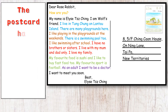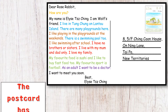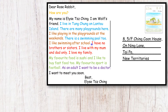The postcard has writing about the family of Elise Tzijun. We can see what Elise says about her family: 'I have no brothers or sisters. I live with my mum and dad only. I love my family.' In an introduction, talking about your family is a good topic.